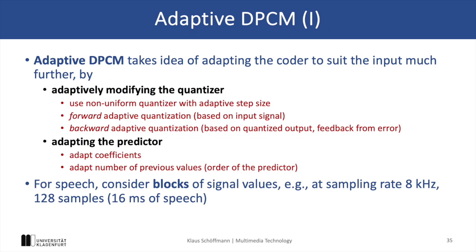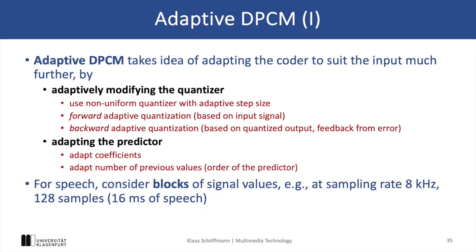There is also an improved version of DPCM called Adaptive Differential Pulse Code Modulation, or ADPCM, which extends the idea of DPCM by adapting the coder to the input signal. This is achieved by modifying the quantizer, using different quantization tables, and the predictor, which works differently for different streams of values, considering the input, the output, and the error of previous encodings. For example, we could vary the length of the signal sequence considered for the prediction, but we could also use different quantization tables according to the value range of the signal values or the produced errors in the past.